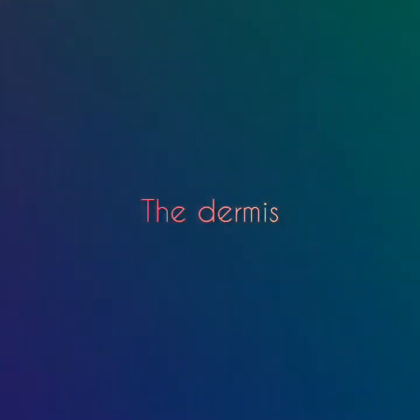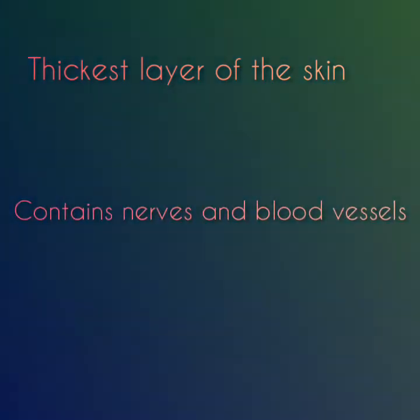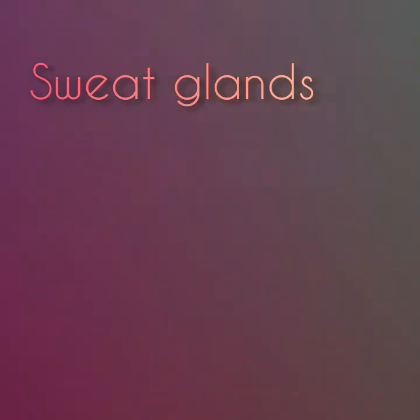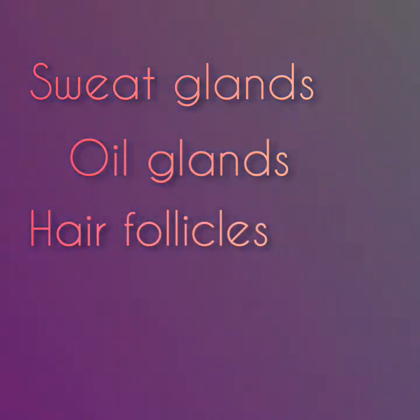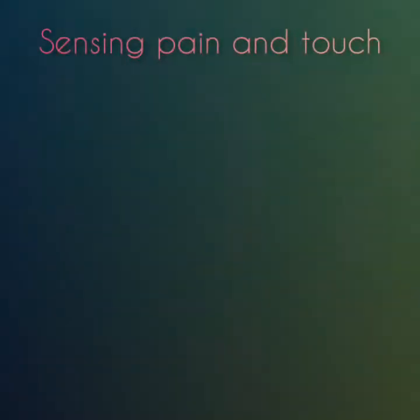The dermis is the middle layer of the skin, below the epidermis. It is the thickest layer of the skin and contains nerves and blood vessels. It is also home to sweat glands, oil glands, and hair follicles. The dermis gives the skin its flexibility and strength and is made up mostly of a protein called collagen that makes skin stretchy and strong.